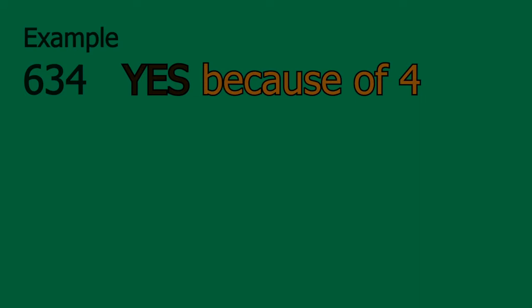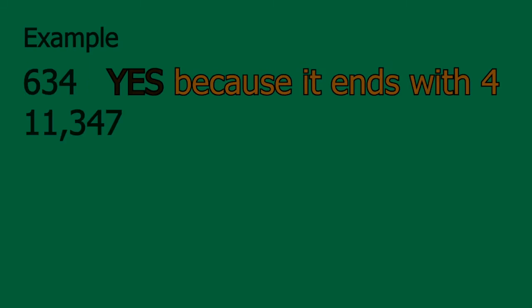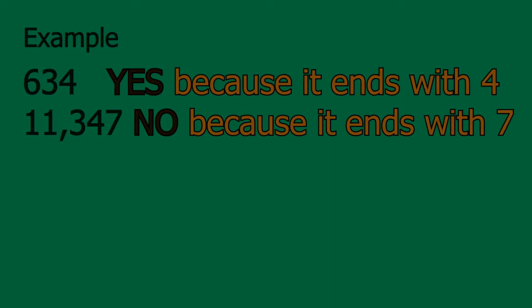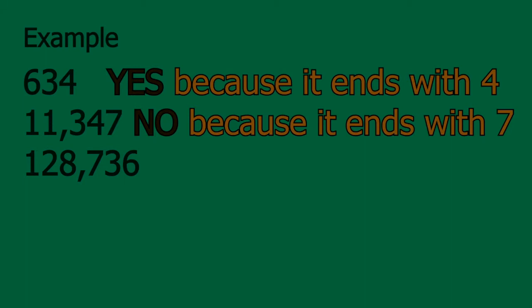Let's look at another number: 11,347. Very quickly, we can say that the answer is no — it cannot be divided by 2 without a remainder because the last digit is 7. Let's look at an even bigger number: 128,736. Immediately, we look at the last digit, 6. We know that 6 is an even number, so yes, this entire number can be divided by 2.